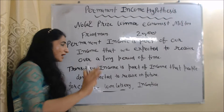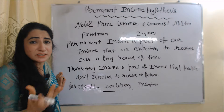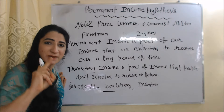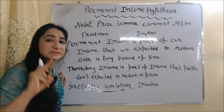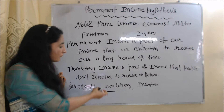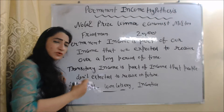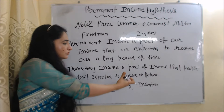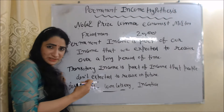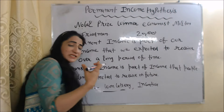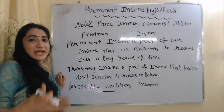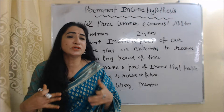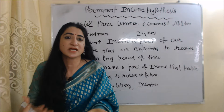Just opposite to this, transitory income is the part of our income that we do not expect to receive in future. For example, you won a lottery or this month you did some extra work and got an incentive. These are incomes you do not expect to receive in future. According to this hypothesis, transitory income does not affect our consumption very much.